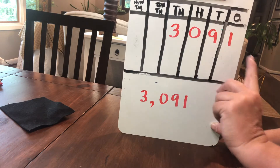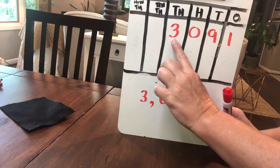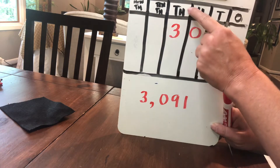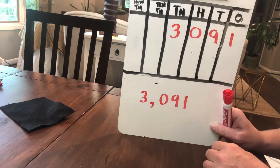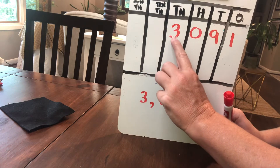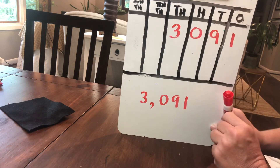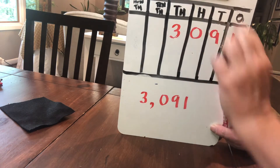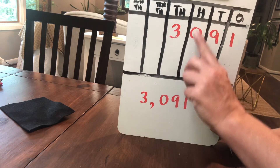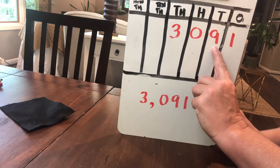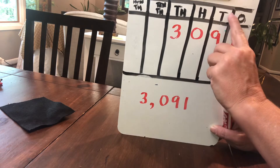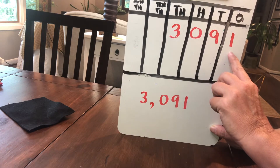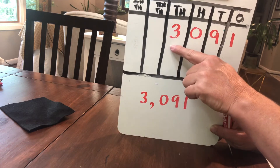I want us to talk quickly about the value of each one of these digits. I can see here that I have the digit three in the thousands column, but it's not just three — it's three groups of thousands, like three $1,000 bills. The value of this digit is 3,000. I have a zero as a placeholder in the hundreds column. The digit nine is worth nine groups of ten — nine times ten is 90 — so the value of this digit is 90. And then there's just one in the ones place. The number is 3,091.